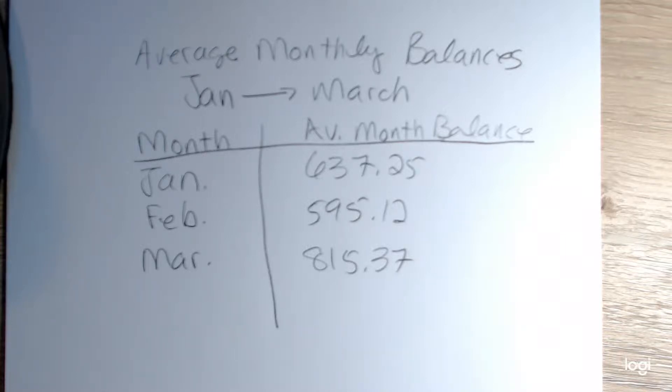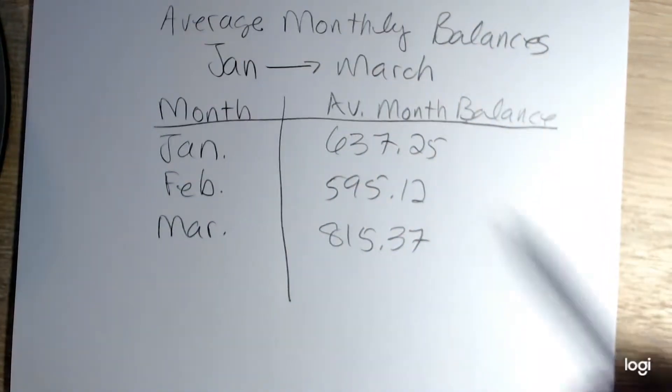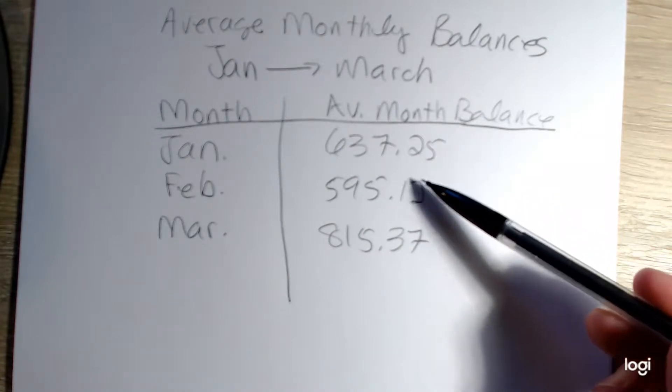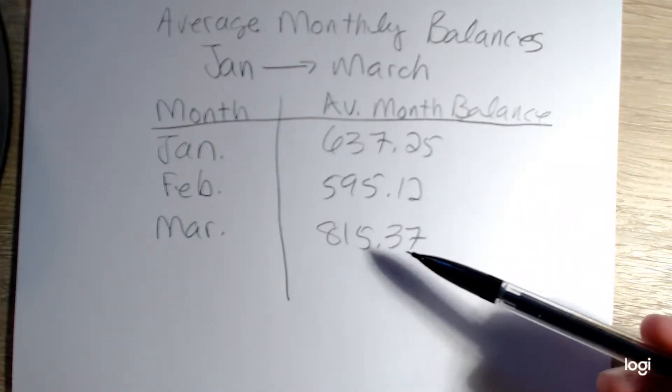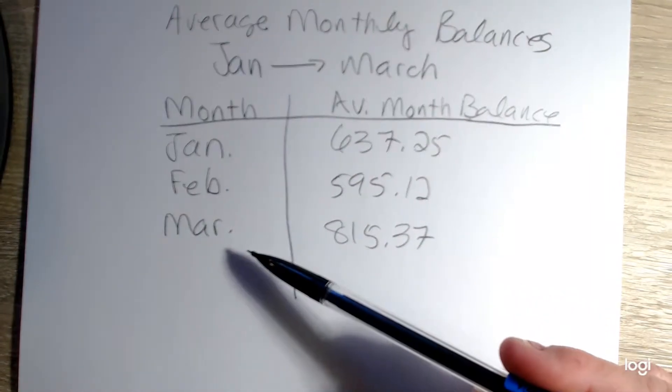For this example, I want to find the weighted average balance for this 3 month period. I'm going to treat my balances for these 3 months as my x value and the days per month for my weight.